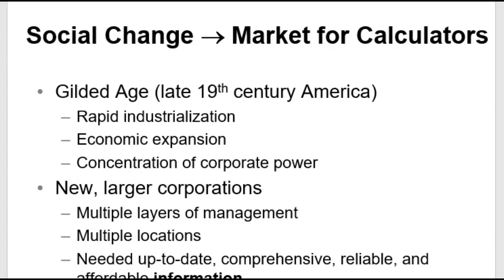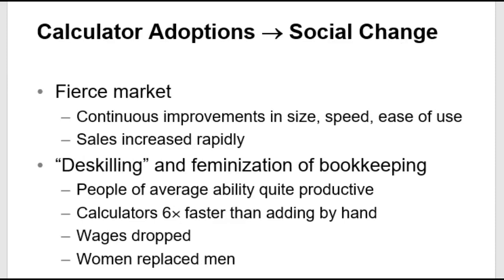Technology continued to take us to great places, and developments continued. Even now we reach America in our conversation — the Golden Age, as it's called, which was centered around rapid industrialization, economic expansion, and a concentration of power. We might talk in a history course about eminent domain and manifest destiny. This is a social change that is driving our productivity increases.